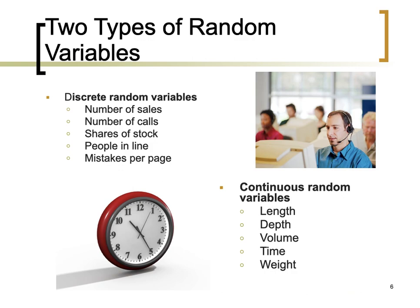Let's consider other examples of discrete and continuous random variables. Examples of discrete random variables include: number of sales, number of calls, shares of stock, people in line, and mistakes per page. Examples of continuous random variables include: length, depth, volume, time, and weight.